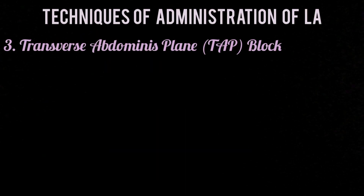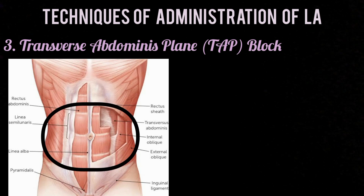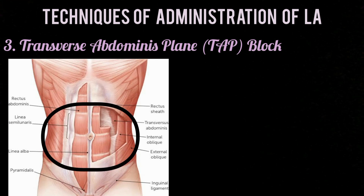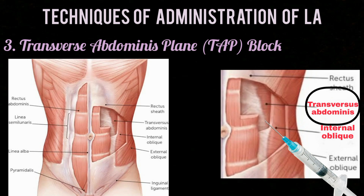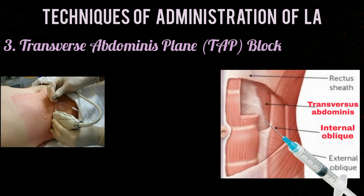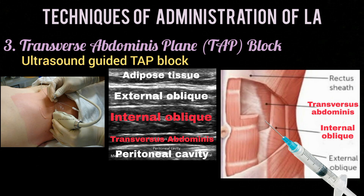The transverse abdominis plane (TAP) block is an anesthetic technique to provide analgesia after lower abdominal wall operations. It involves injection of local anesthetic into the fascial plane between the internal oblique and transversus abdominis muscles. These muscle layers can easily be visualized on ultrasound during the procedure, which is why it is also known as the ultrasound-guided TAP block.